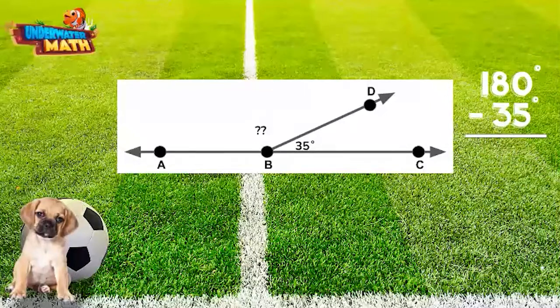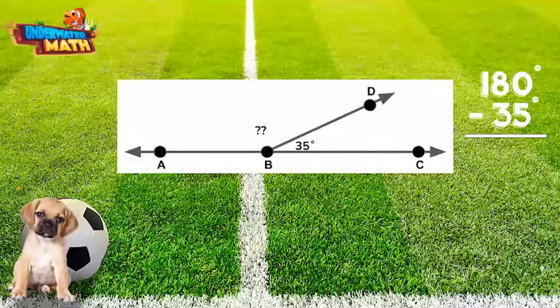180 degrees minus 35 degrees equals 145 degrees. Angle ABD measures 145 degrees.